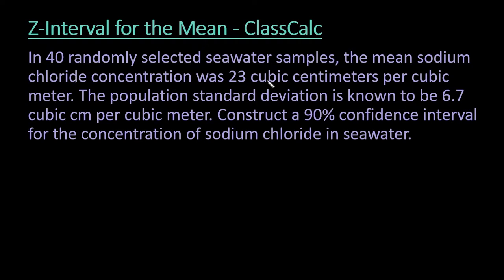What we have here is in 40 randomly selected seawater samples, the mean sodium chloride concentration was 23 cubic centimeters per cubic meter. The population standard deviation is known to be 6.7 cubic centimeters per cubic meter, and we're going to construct a 90% confidence interval for the concentration of sodium chloride in seawater. So the first thing that you want to do is check your conditions.